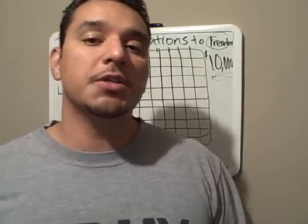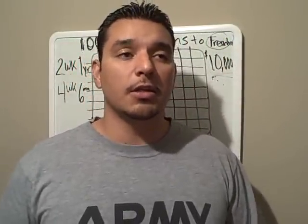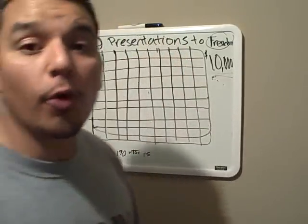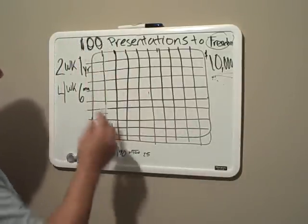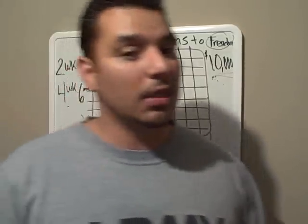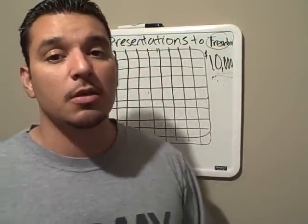Two times 52 is 104, that's an extra four. So that'll cover your 100 presentations for the year. Now you can also do four presentations a week and get it done in half the time, in six months.